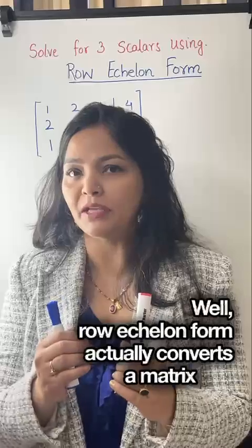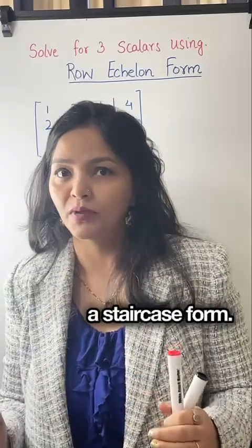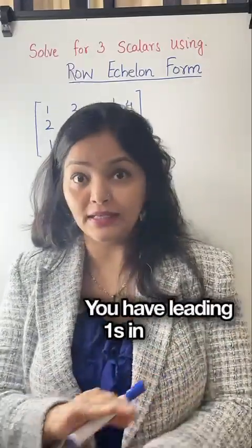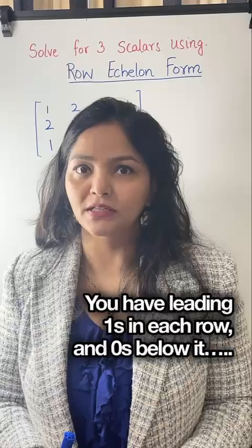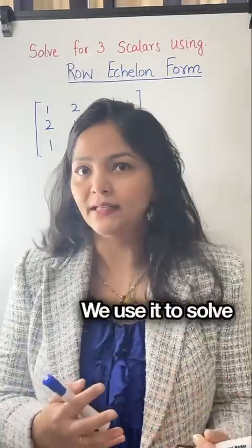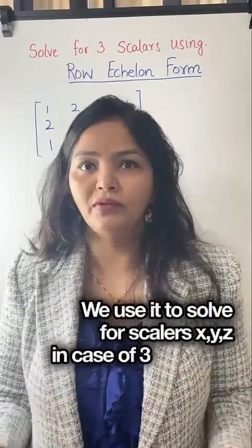Row echelon form actually converts a matrix into a staircase form. You have leading ones in each row and zeros below it. We use it to solve for scalars x, y, z in case of three variable equations.